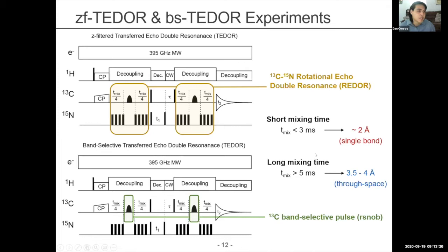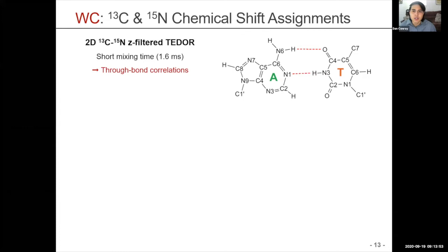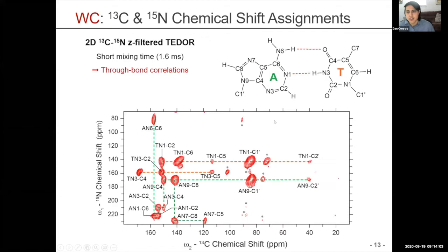We use short mixing times — based on simulations, a short mixing time of less than 3 milliseconds will show relatively short distances, often a single bond. At longer mixing times we can see through-space correlations, and it's these longer mixing times that we hope will show through-space correlations across the helical axis. For the Watson-Crick sample, we first do the carbon-13, nitrogen-15 chemical shift assignments using a short mixing time to see through-bond correlations.